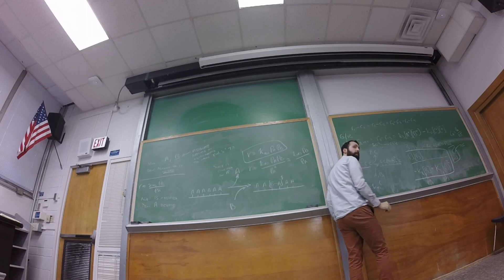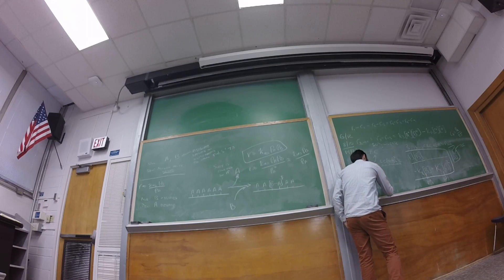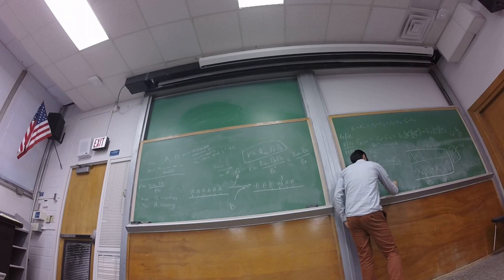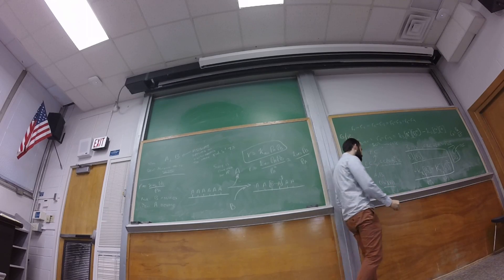What's in the numerator? A and B. What's in the denominator? C squared.